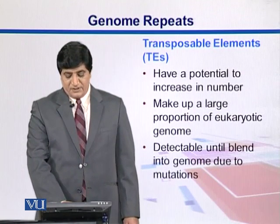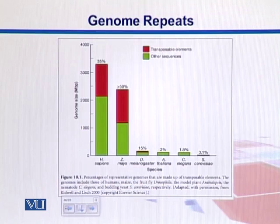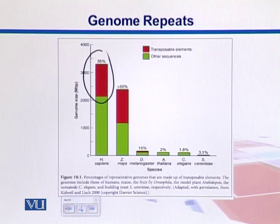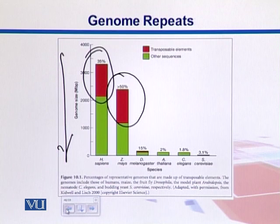Transposable elements are detectable, but sometimes they blend into the genome and cannot be detected. In this diagram, we can see the proportion of these transposable elements — red ones are transposable elements, while green ones are other sequences. Across organisms such as Homo sapiens, Zea mays, Drosophila, Arabidopsis, C. elegans, and Saccharomyces cerevisiae, transposable elements make up 35 percent of the human genome and more than 50 percent in Zea mays, while Drosophila has about 15 percent. The y-axis represents genome size; humans and Zea mays have the largest proportions of repeats.